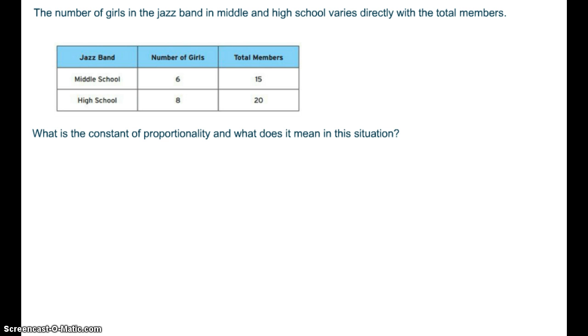So this term varies directly is another way to say is proportional to. So the number of girls is proportional to the number of members. When the total members change, so do the number of girls. So we have to find the constant of proportionality and tell what it means.